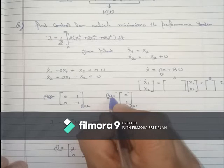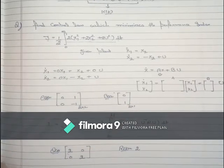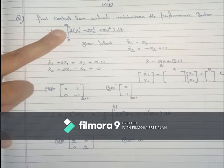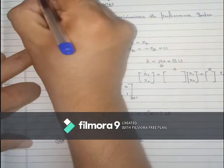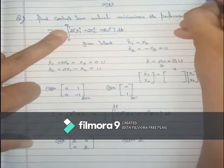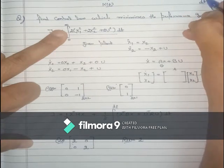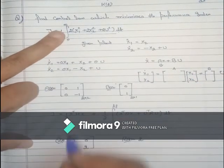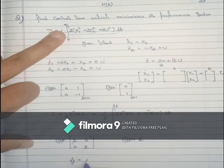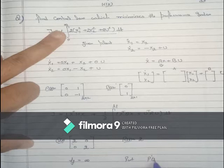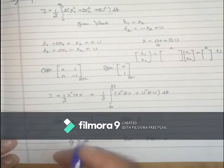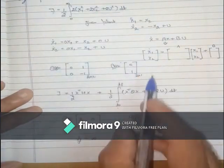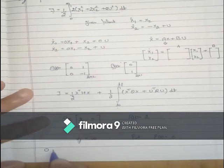This is the case when time is infinite. When the final time tF is infinite, P_dot(t) — meaning dP(t)/dt — in the Riccati matrix equation tends to zero. So when tF equals infinity, we put P_dot(t) equal to 0. In the Riccati matrix equation, substituting this gives: 0 plus Q(t) plus ...